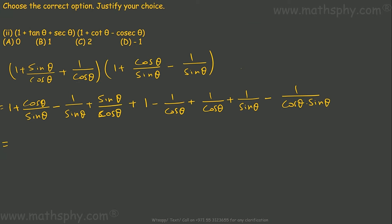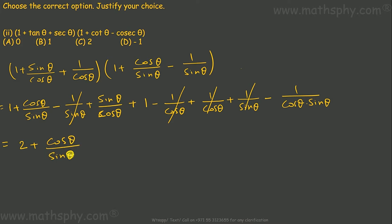Now let's see what can be cancelled. Some terms cancel, and what I have remaining is: 1 and 1 combine to give 2, plus cosθ over sinθ, plus sinθ over cosθ, minus 1 over sinθ·cosθ.